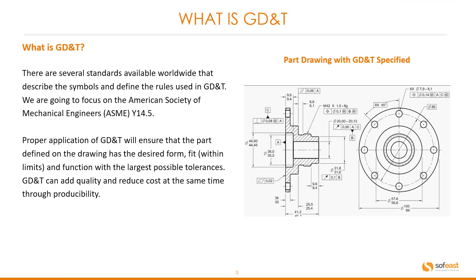So what is GD&T? There are several standards available worldwide that describe the symbols and define the rules used in GD&T. We are going to focus on the American Society of Mechanical Engineers, or the ASME standard Y14.5. Proper application of GD&T will ensure that the part defined on the drawing has the desired form, fit within limits and function with the largest possible tolerances. GD&T can add quality and reduce cost at the same time through produceability. You can see an example of a 2D drawing here with standard dimensions as well as GD&T dimensions.